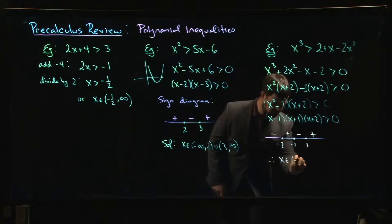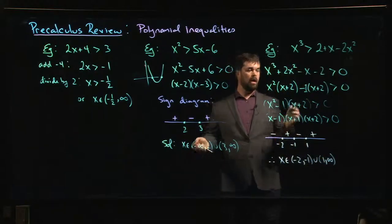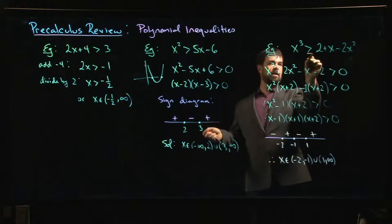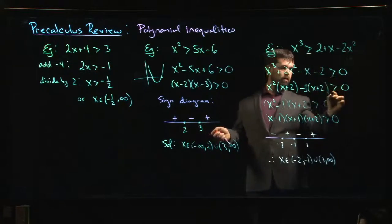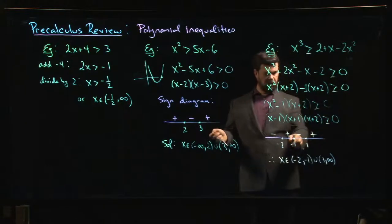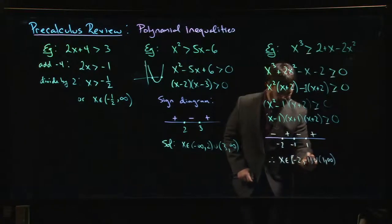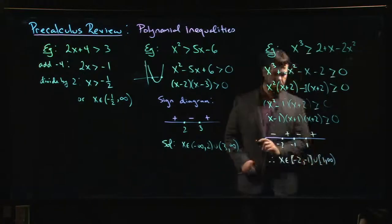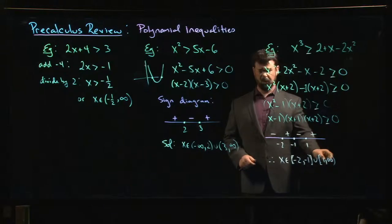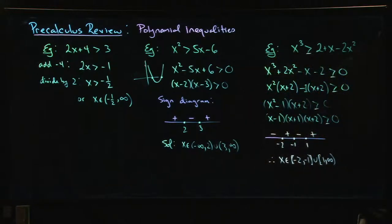I want x to be between minus 2 and minus 1, or from 1 to infinity. Of course, if this had been bigger than or equal to, we could have done that. The only difference is now we include the zeros, and so the round brackets would become square brackets, except on the infinity. We never include infinity.